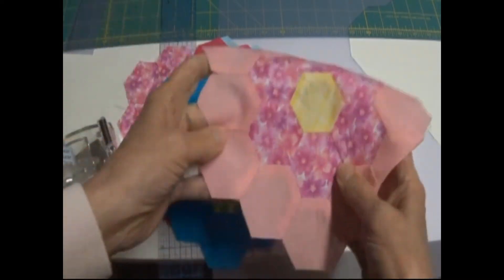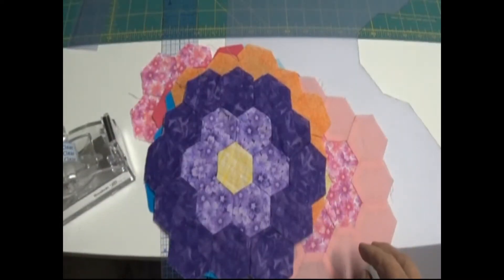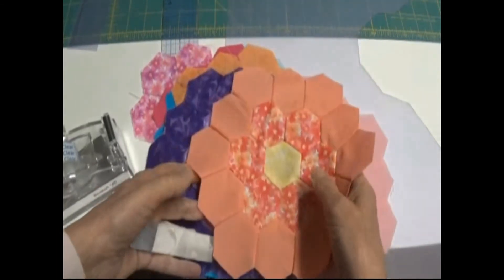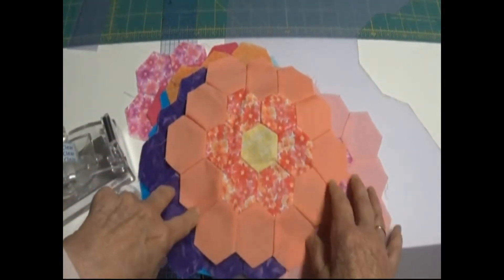They're not machine sewn, they are hand sewn. So let me show you how to make a marker. We're going to call it a marker to mark your hexagons for sewing.